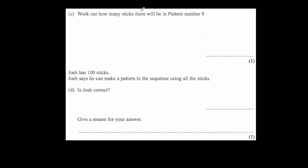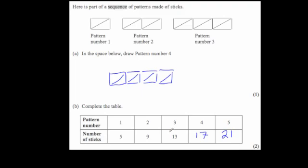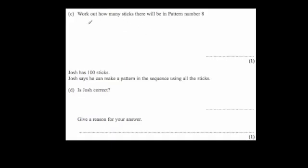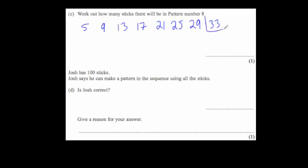The next question says work out how many sticks would be in pattern number 8. The sequence went 5, 9, 13, 17, 21 — that's 5 terms. Carrying on: 25, 29, 33. So in pattern number 8 there are 33 matchsticks.